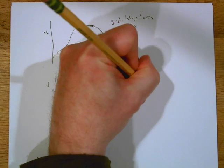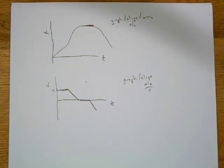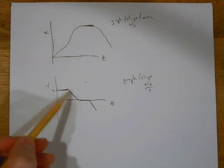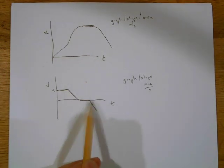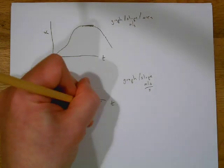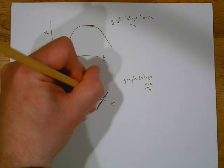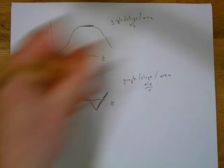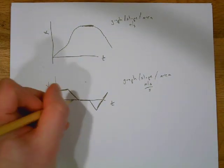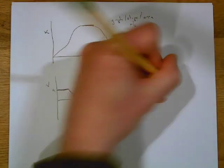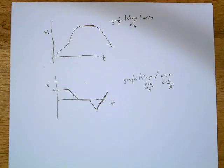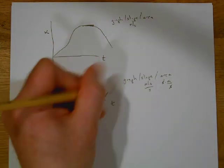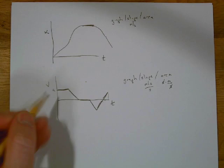The slope of a velocity-time graph would be meters per second per second — that is acceleration. So you could identify where you have no acceleration, negative acceleration, or positive acceleration on the graph. And the area — seconds times meters per second — gives you meters, so the area here would be your displacement. You can tell from the areas how much you moved forward versus backward.